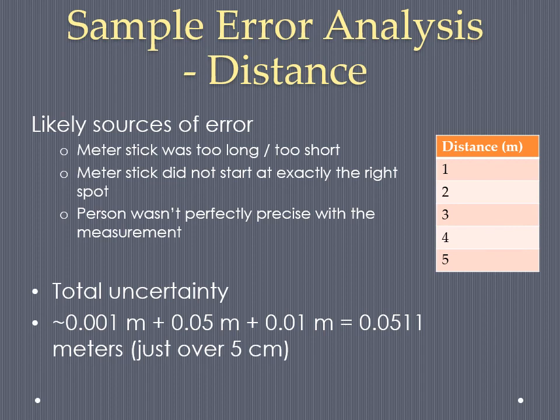I think that the chances of me not starting at the right spot are, you know, I might be off by five centimeters. So that's 0.05 meters. And it's hard to take data on that meter stick more accurately than one centimeter. So I would say that's another 0.01 meter. When you add all three of those together, you get a total uncertainty of 0.0511 meters, which means these distance values from my table are probably plus or minus 0.0511 meters, just over five centimeters off.